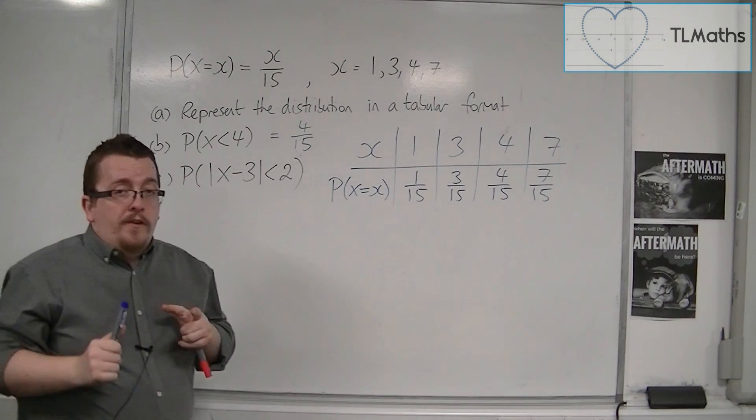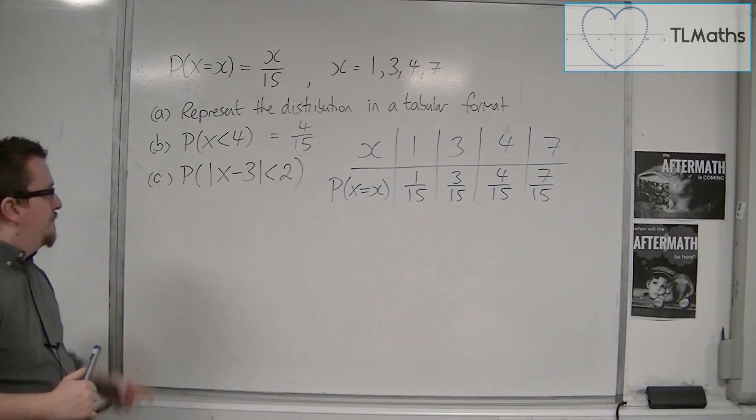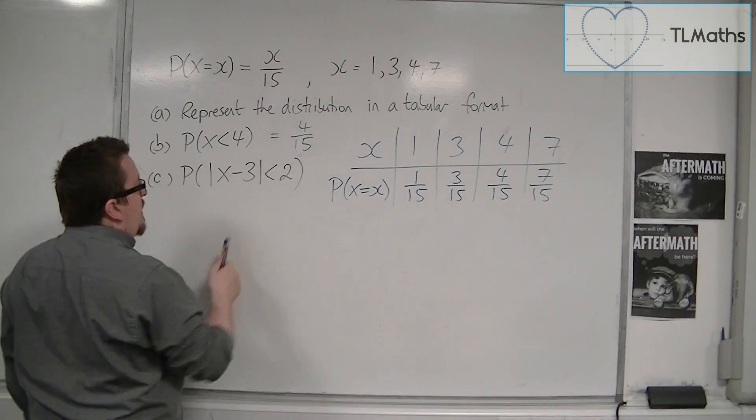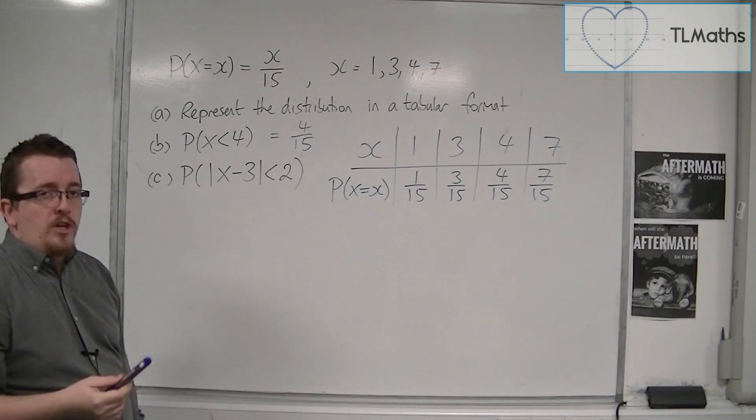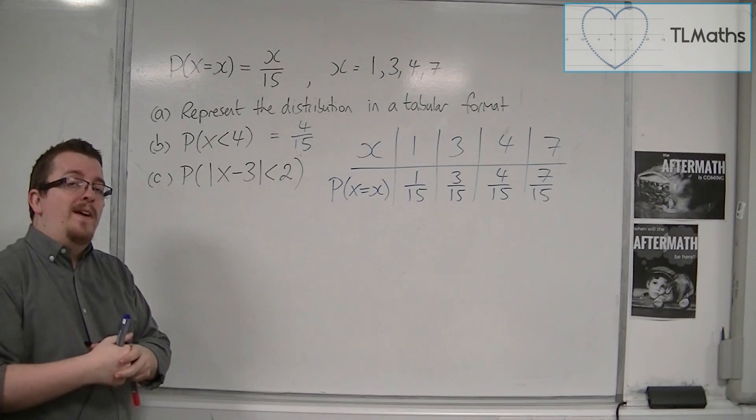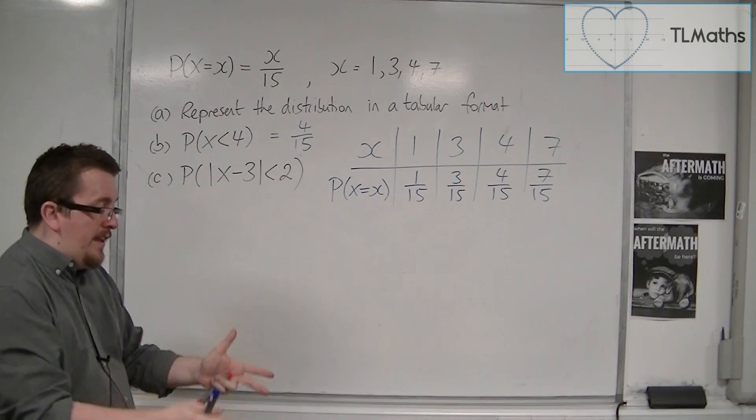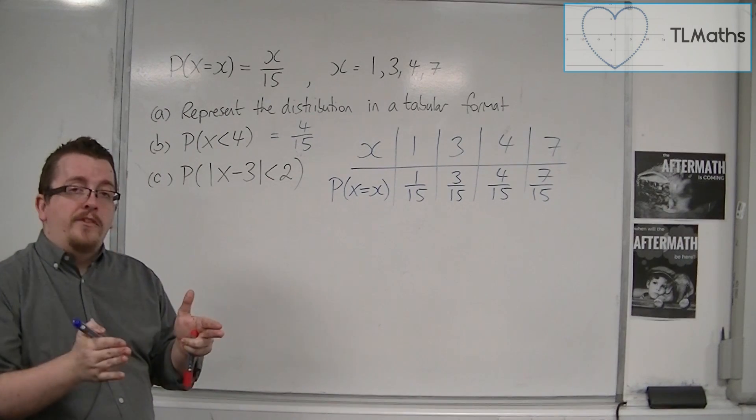Now what's a little bit more difficult is this part C. Now these symbols here represent modulus signs, otherwise referred to as the absolute value. And what effectively they do is that they make every number that is within those modulus signs positive.